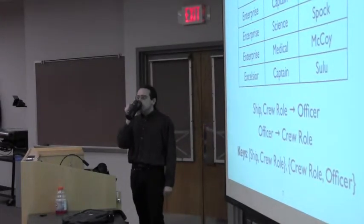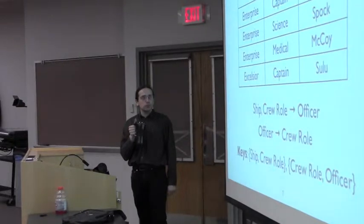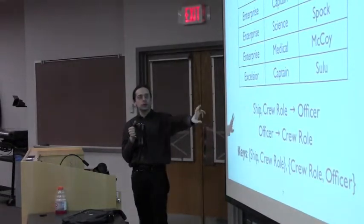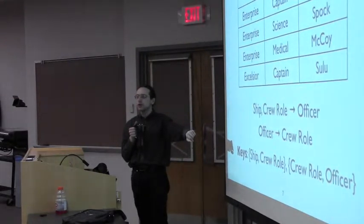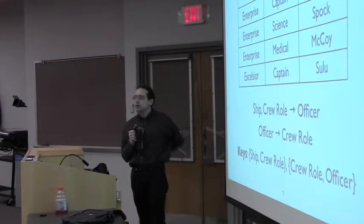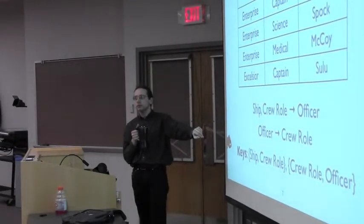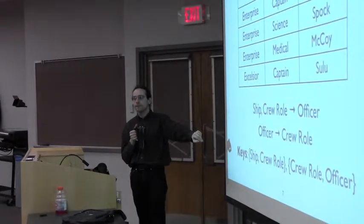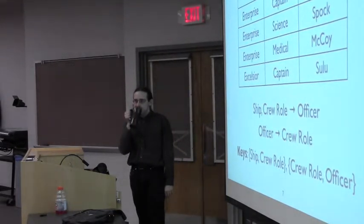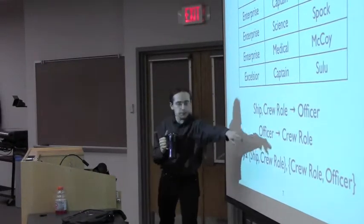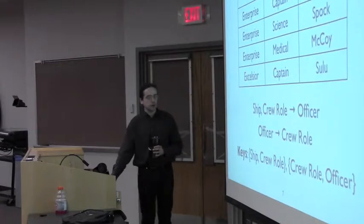According to these functional dependencies, if two officers have the same name, they'd better have the same role. There can be two McCoys, but they'd both better be doctors. Given the functional dependencies here, officer itself is not necessarily a key — but an officer combined with a ship is a key. So officer is a super key, and the second key should be ship and officer.